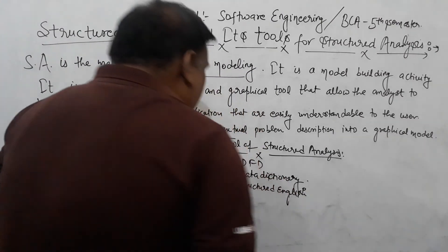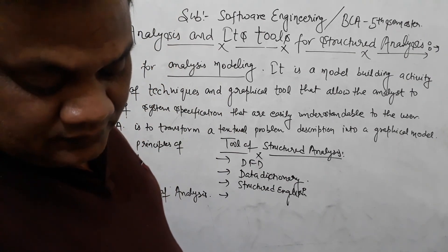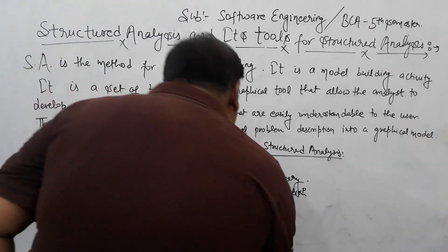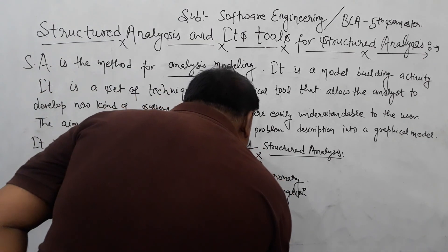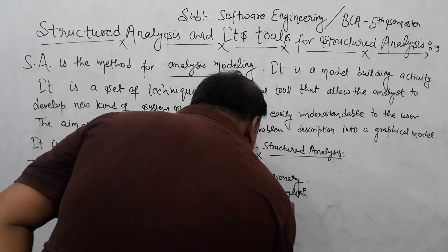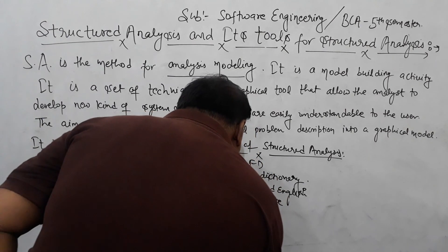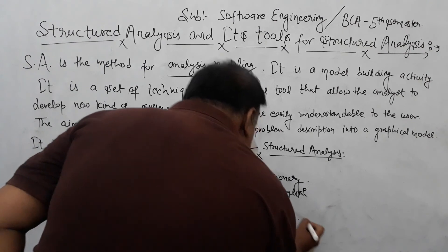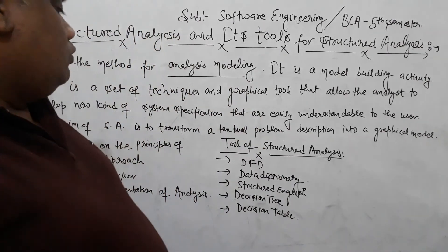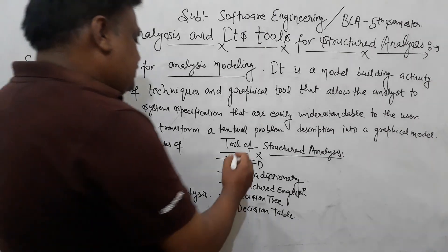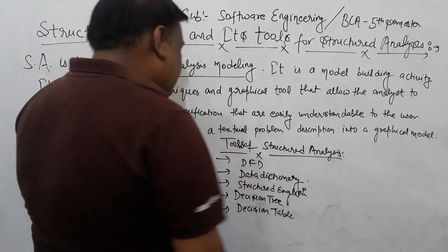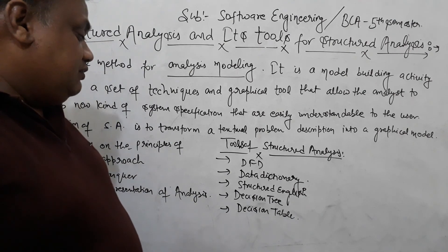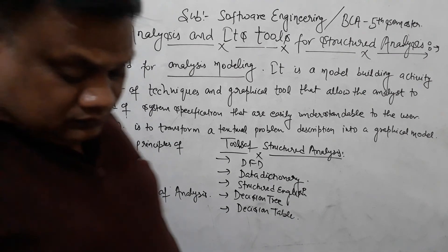The third tool is Structured English. The fourth one is Decision Tree. The fifth one is Decision Table. So the tools of Structured Analysis are: DFD (Data Flow Diagram), Data Dictionary, Structured English, Decision Tree, and Decision Table.